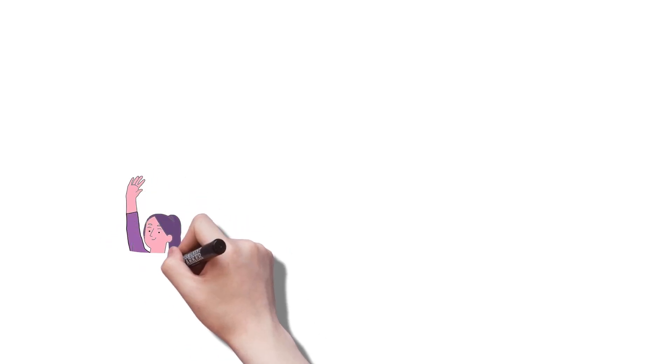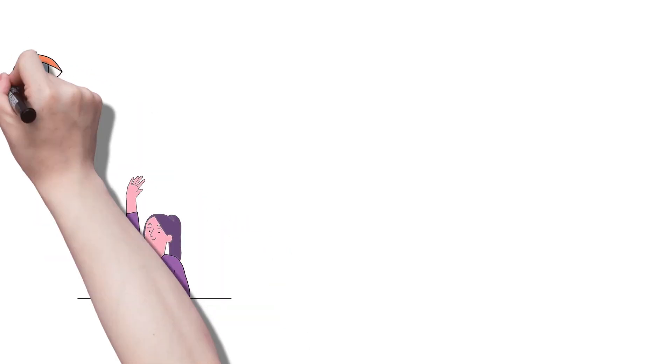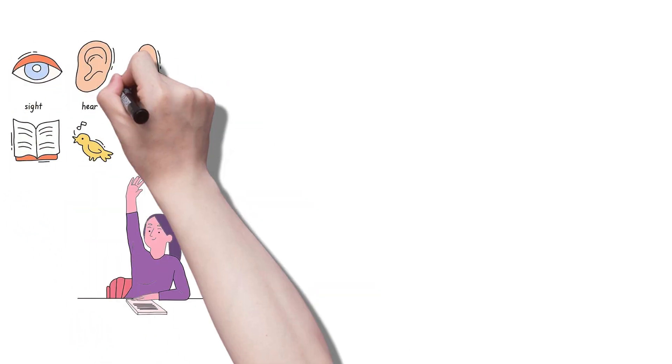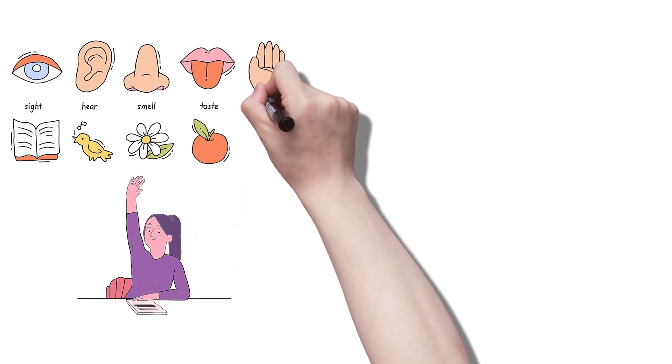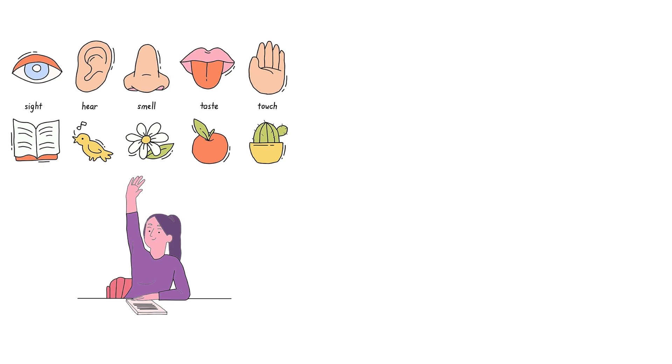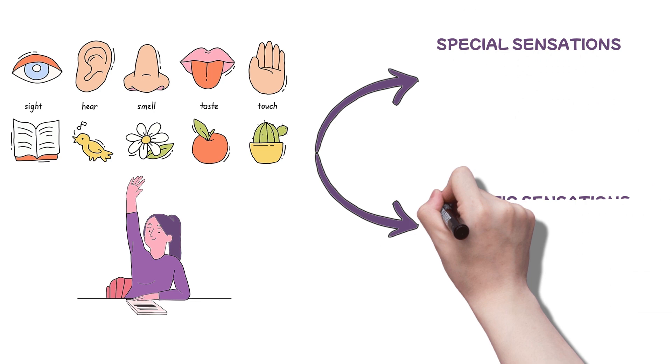Raise your hand if you can name the five senses: sight, hearing, smell, taste, touch. Nailed it! But our sensations, from a physiological standpoint, are divided into two: the special and somatic sensations. The special sensations rely on dedicated sense organs like those for vision, hearing, taste, and smell.